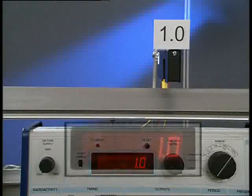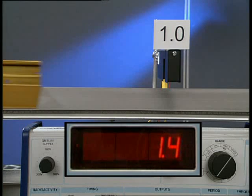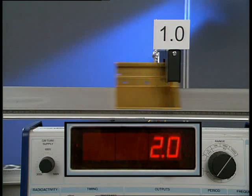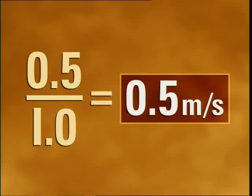The timer reads 1 second at the start of the next half meter, and 2 seconds at the end. Again, distance traveled is 0.5 meters and time taken 1 second, so the average speed is still 0.5 meters per second.